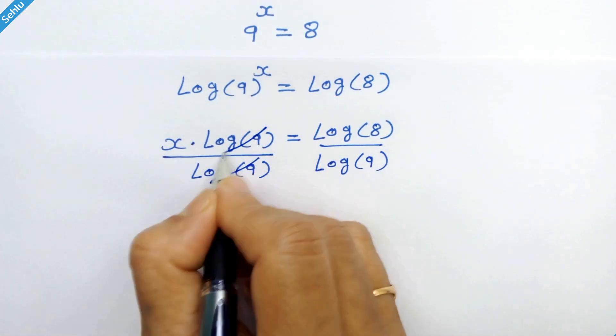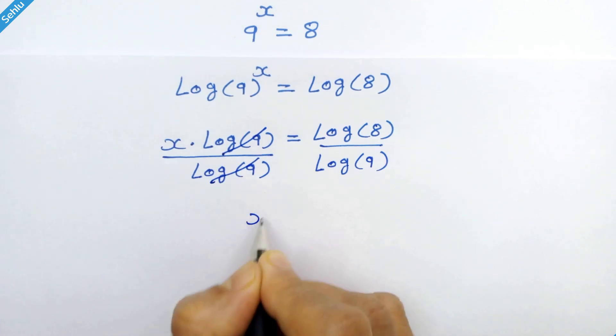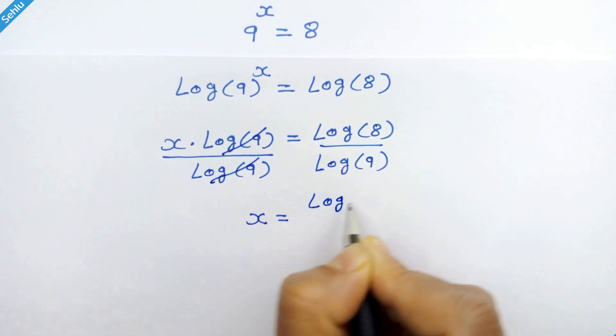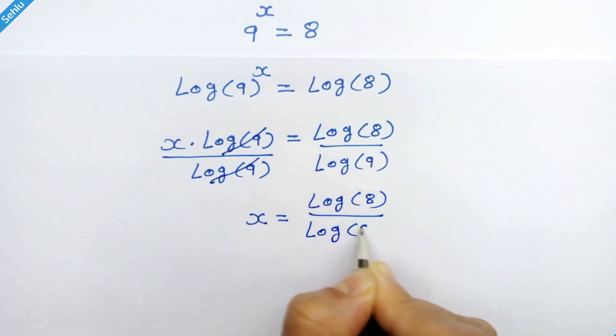So these 2 get cancelled out. Now we have x is equal to log of 8 over log of 9.